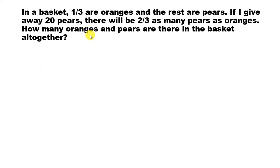In a basket, one-third are oranges and the rest are pears. If I give away 20 pears, there will be two-thirds as many pears as oranges. How many oranges and pears are there in the basket altogether?